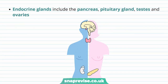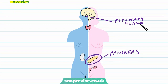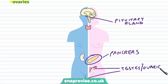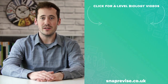Examples of endocrine glands found in the body include the pancreas, the pituitary gland, the testes, and the ovaries. The pancreas is part of the digestive system, the pituitary gland lies at the base of the brain, and the testes and ovaries are reproductive organs. All of these are endocrine glands, which means they release their hormones into the blood.